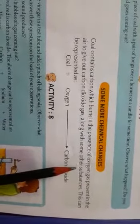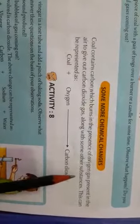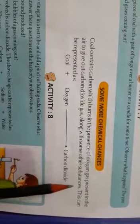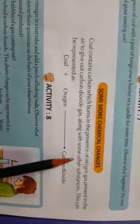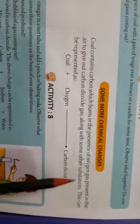When fuel is burned, ash is produced and carbon dioxide gas is released. So, carbon dioxide gas is formed along with some other substances like ash.